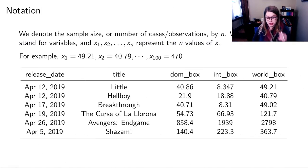I'm going to introduce a little bit of notation here. So we denote the sample size or the number of cases or observations by the letter n, small n typically. And then we could use x and y as variables. And then we use little subscripts, the kind of like little mini numbers down below to denote the values of x. So x1, that would be the first value, x2, that's the second one, all the way up to xn. And that's the nth value. So for example, from my movie data, x1, the world box office for my first movie is 49.21. And then the next one is 40.79. And then you can't see all the way down to the bottom of this data set to the hundredth one, but I went and looked and it was 470. So I could think about all those different x's.